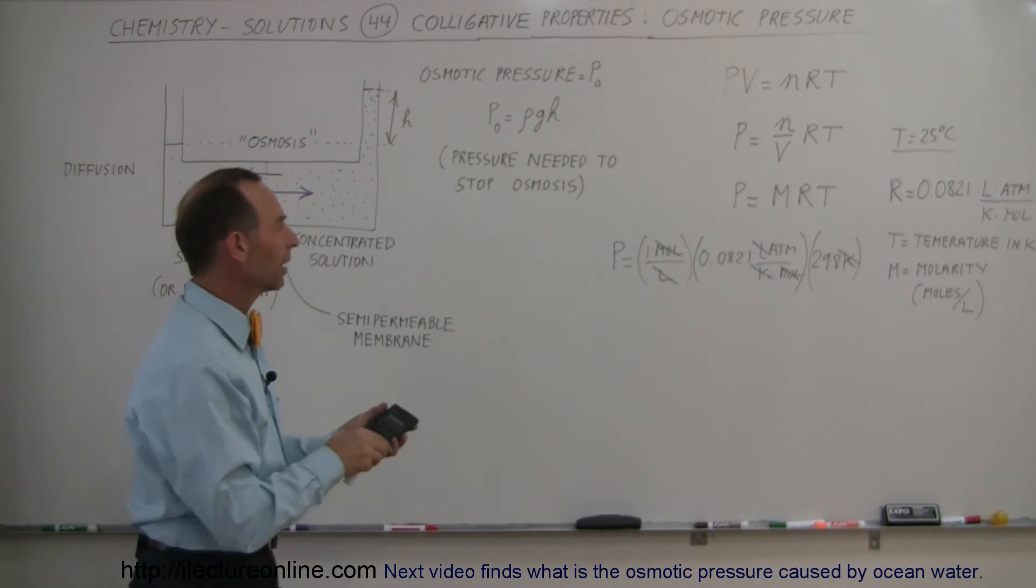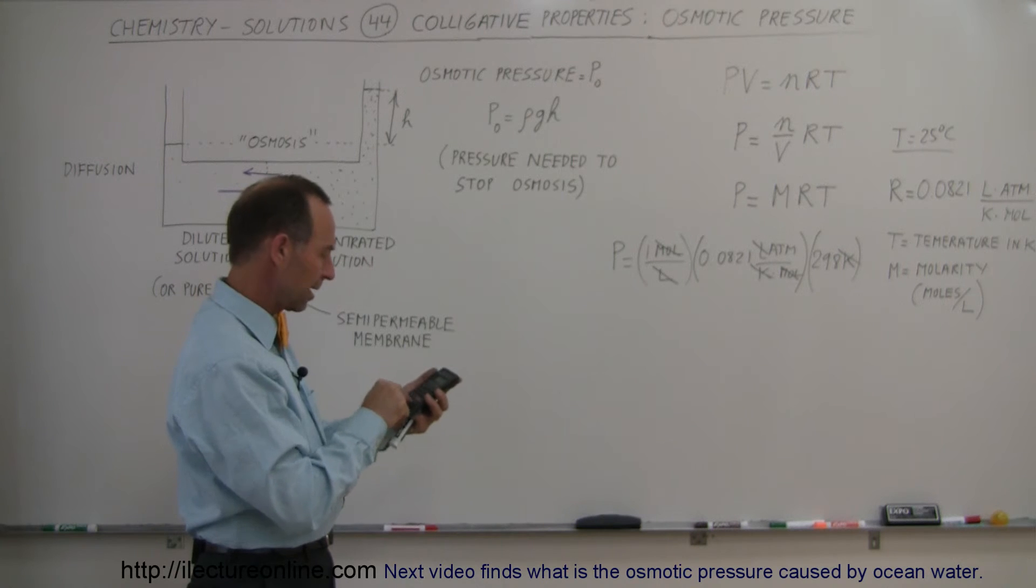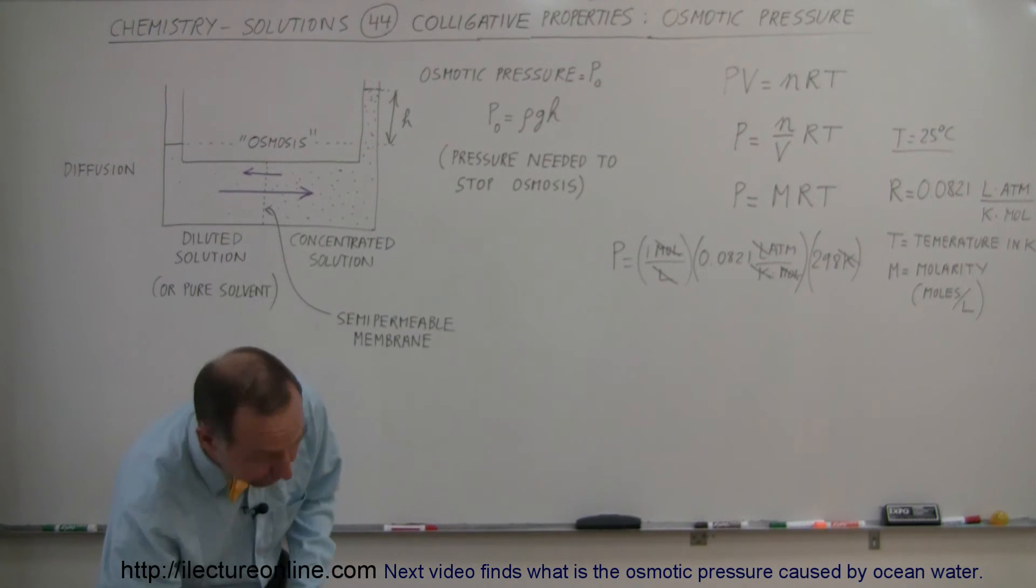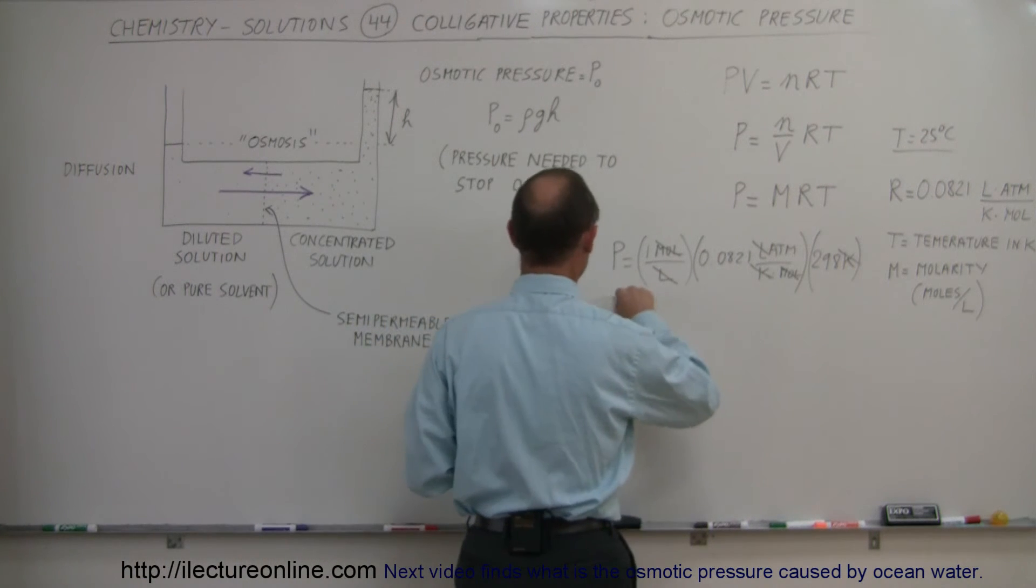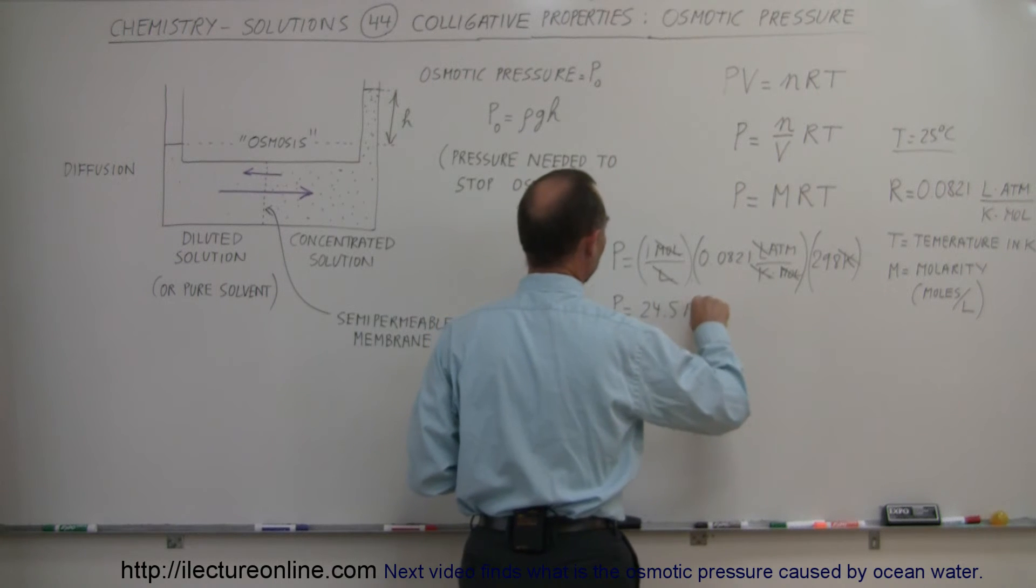And with a calculator, let's see what that amounts to. That would be 298 times 0.0821, and that would be 24.5 atmospheres. P equals 24.5 atmospheres.